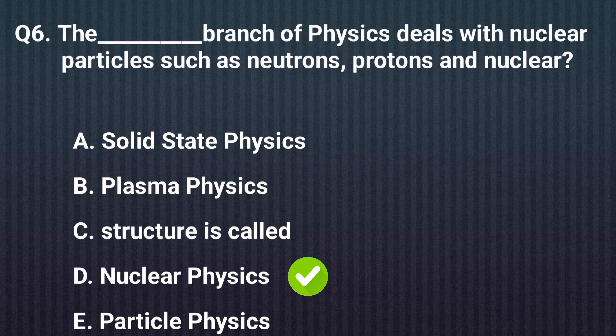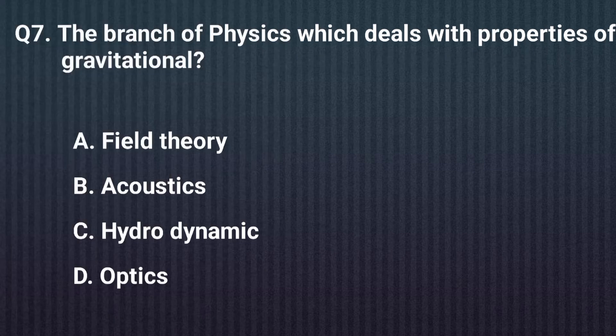Question number seven. The branch of physics which deals with the property of gravitational — the right answer is option A: Field Theory.